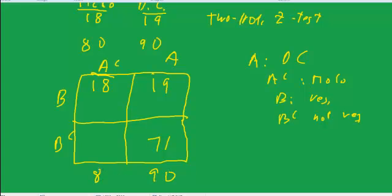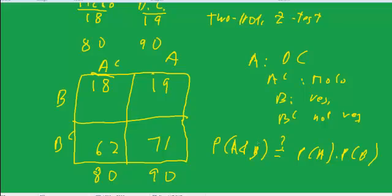So we have event A, event B, A complement, B complement. We're just doing this in terms of numbers, not in terms of percents. 71, 90, 80, 62. And when we were thinking about independence, what we wanted, the question was, does the probability of A and B equal probability of A times probability of B? And if they're equal, then they're independent.